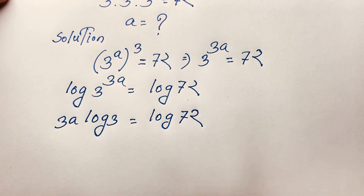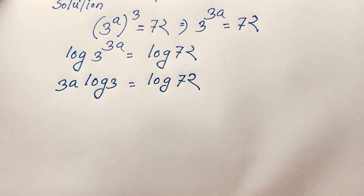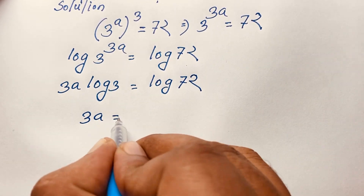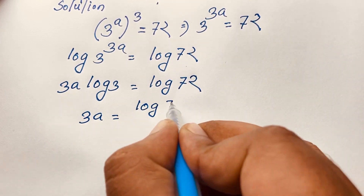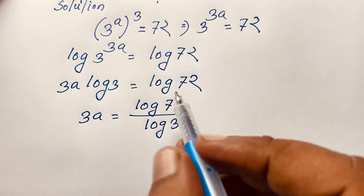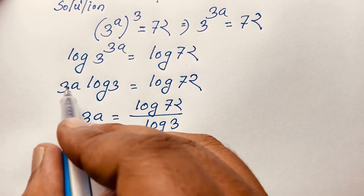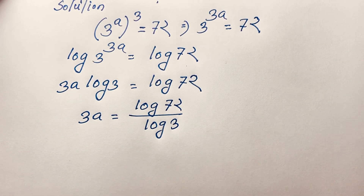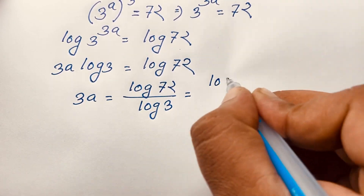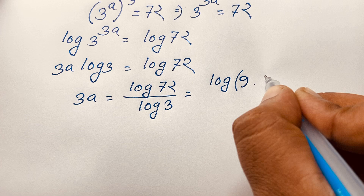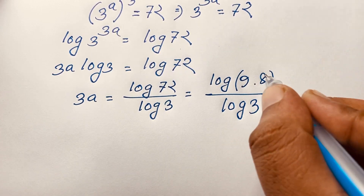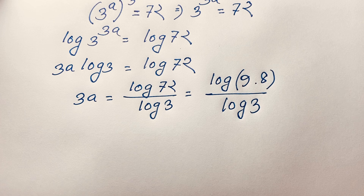Now I divide both sides by log 3. So we get 3a is equal to log 72 divided by log 3. Log 3 and log 3 cancel out. Now I can write log 72 as log of 9 times 8, over log 3 — since 9 times 8 equals 72.